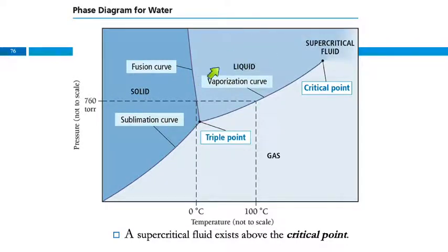This is the liquid region, and this is the gas region. This is the sublimation curve that tells us that at this pressure, it will sublimate at this temperature.